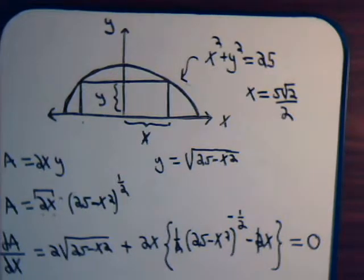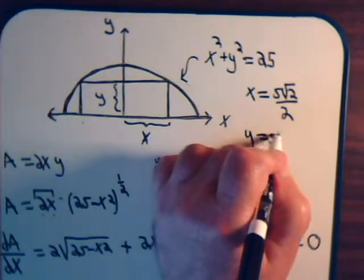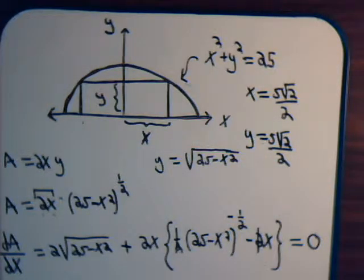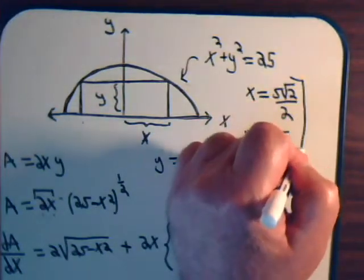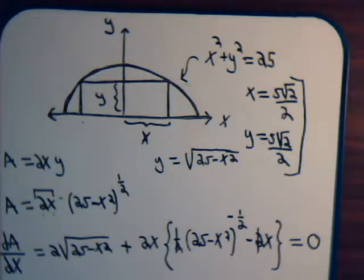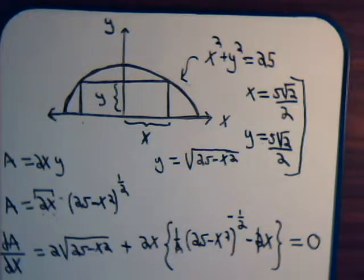To get y, we substitute that value for x, and when we do that y also equals that same value — 5 times the square root of 2 over 2. These values of x and y are critical values for the area, representing either a maximum or a minimum. To see which it is, we need to take the second derivative of the area with respect to x, put this value for x in, and see whether we get a positive or a negative expression.